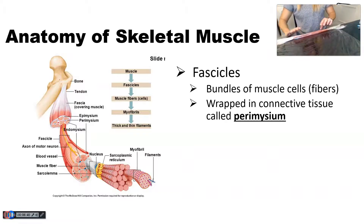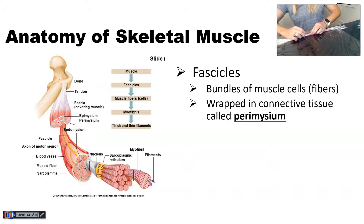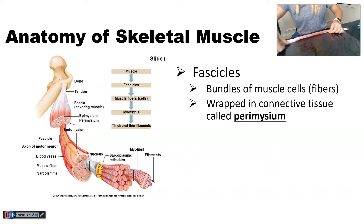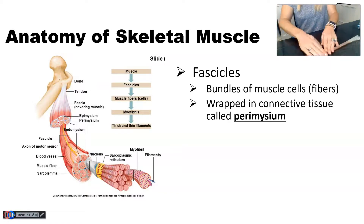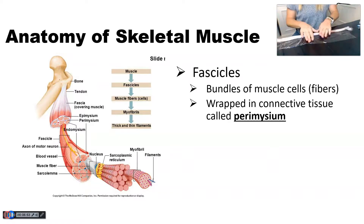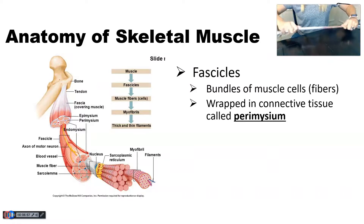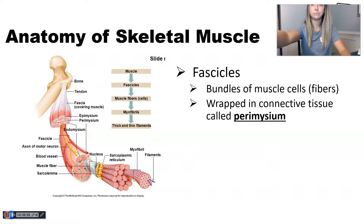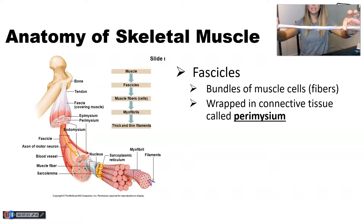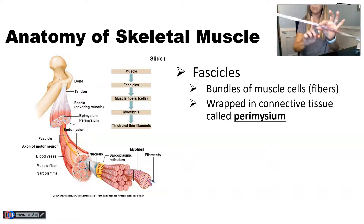The perimysium is covering the entire fascicle — I'm going to show you here. I'm going to wrap the entire bundle in my saran wrap, wrapping my fascicle in perimysium. So this is a fascicle wrapped in perimysium — remember there were a bunch of individual fibers that were wrapped in endomysium.